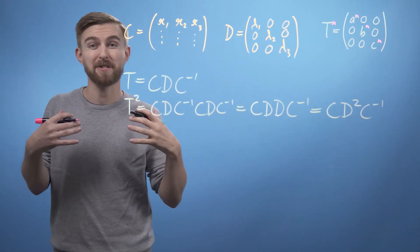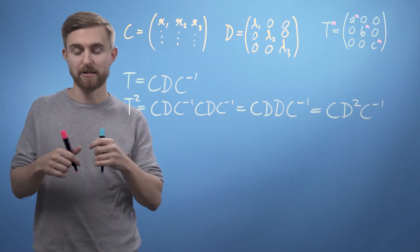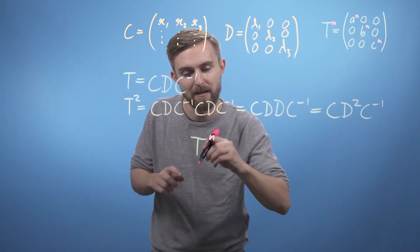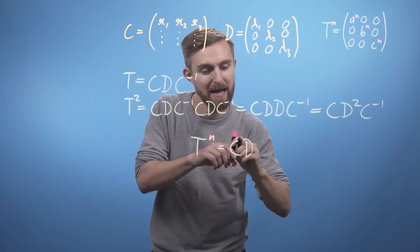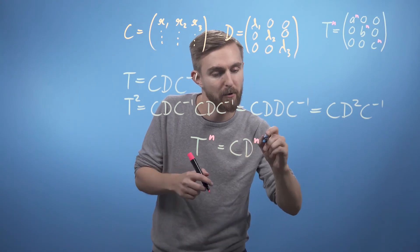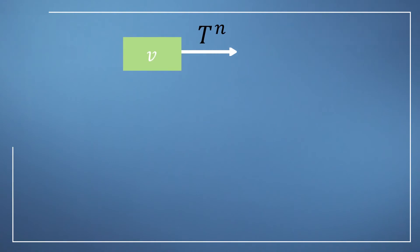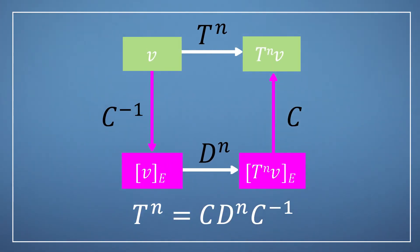We can of course then generalize this to any power of T we'd like. So finally, we can say that T to the power of n is going to equal C D to the power of n multiplied by C inverse. We now have a method which lets us apply a transformation matrix as many times as we'd like without paying a large computational cost.